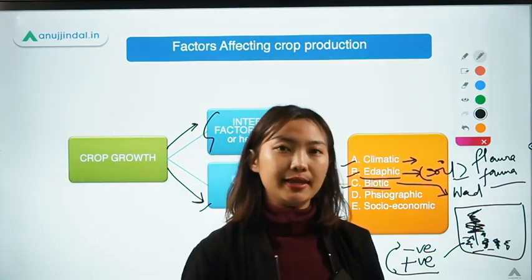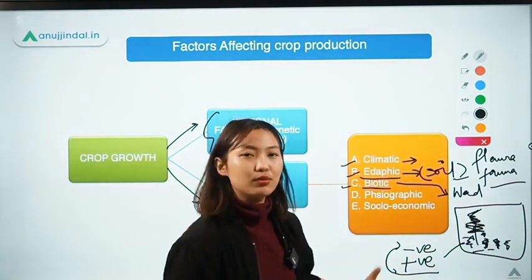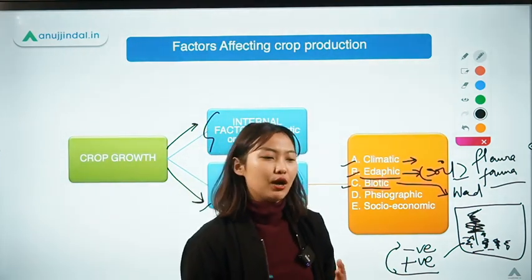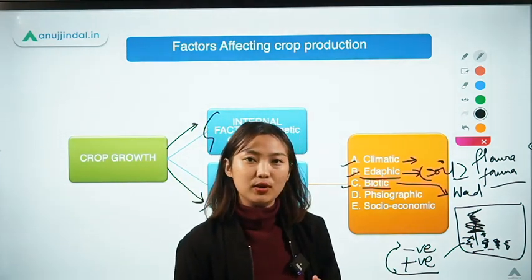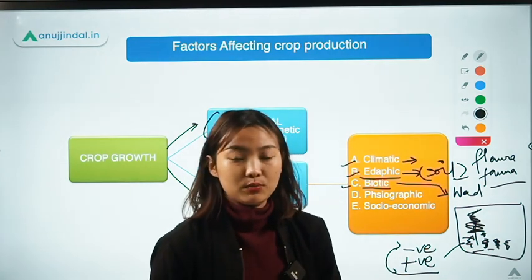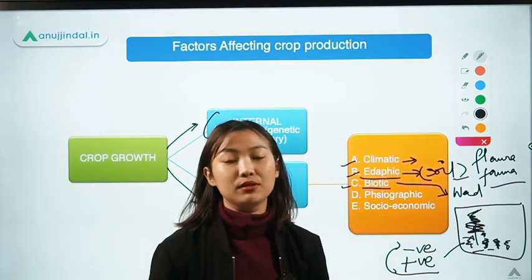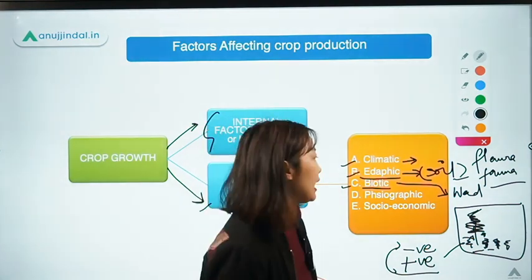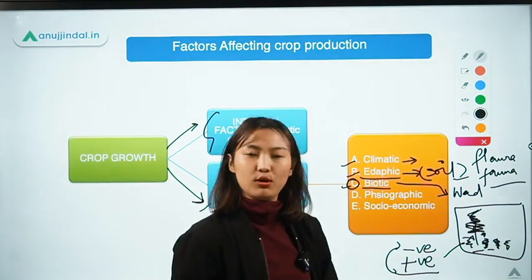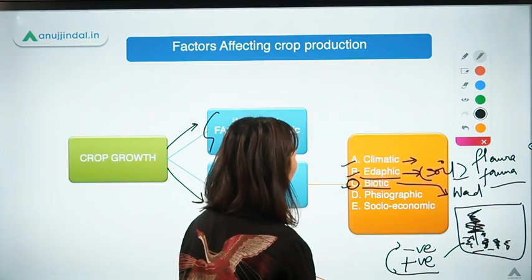A positive example of biotic factors is the presence of earthworms in the soil. Earthworms are good for the soil — they make the soil structure better, making it more arable, and you can also get worm compost from them. So biotic factors can have both a positive as well as a negative impact on the plants.